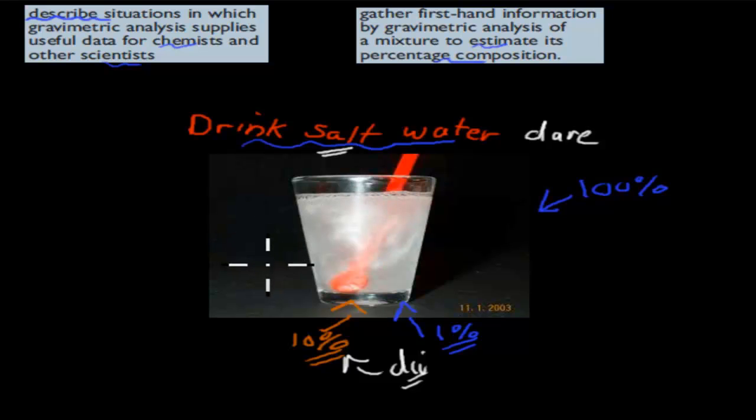Obviously, I mean, you generally wouldn't die because you would just spit it out. But just theoretically, let's say you would drink it all. So in this case, you want to find out exactly how much composition is salt, to make sure that you don't die when you accept that dare.